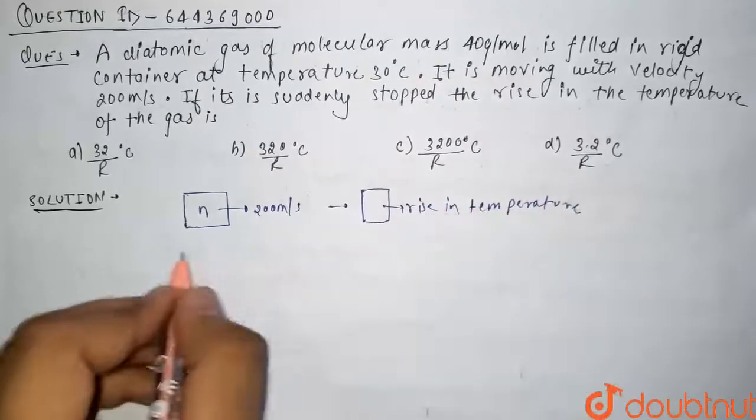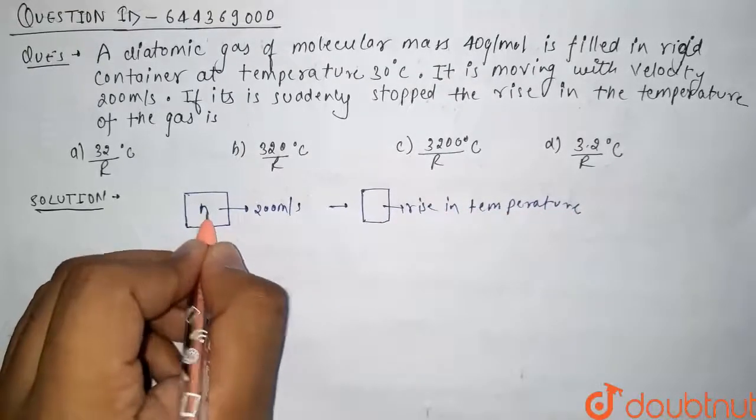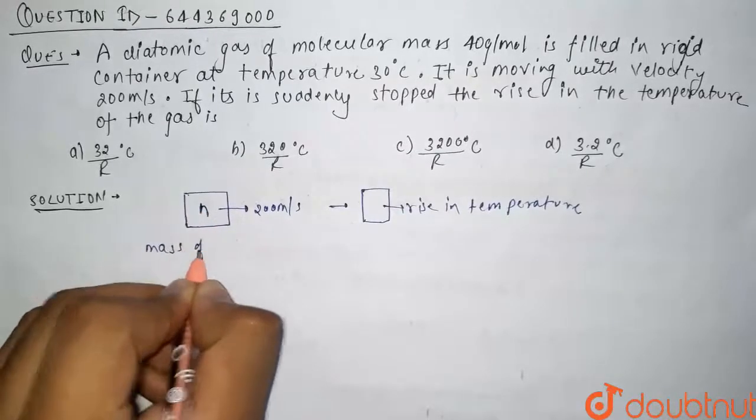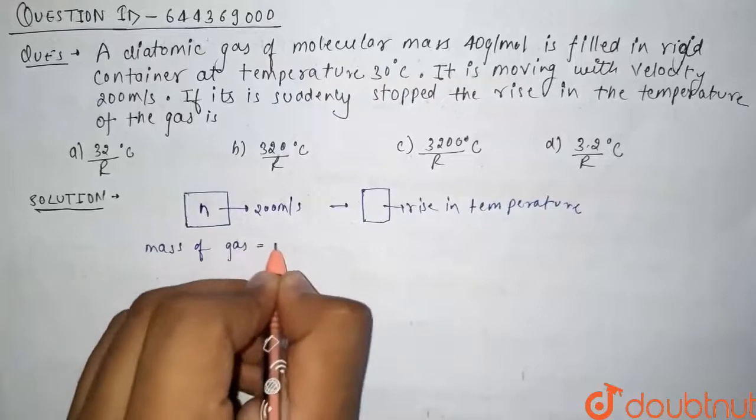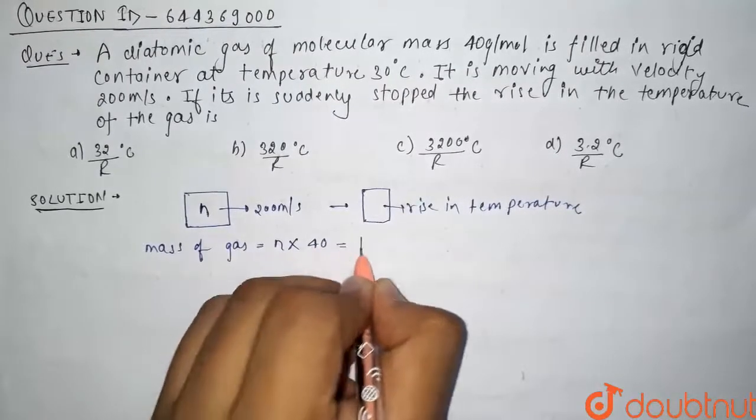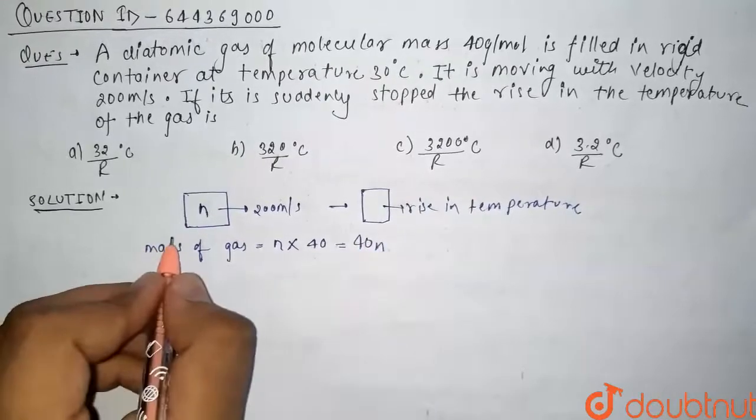If we have been given that n moles are there, then total mass of the gas will be number of moles into molecular mass, that is 40. So it will be 40n.